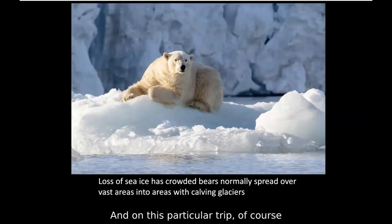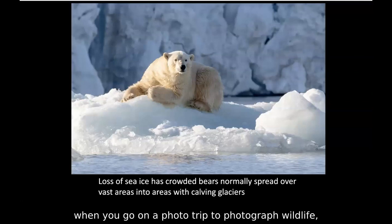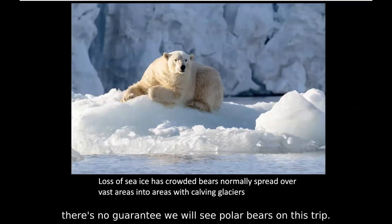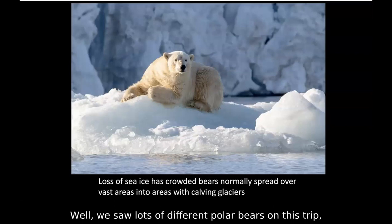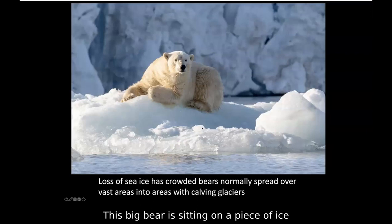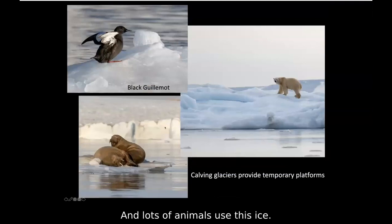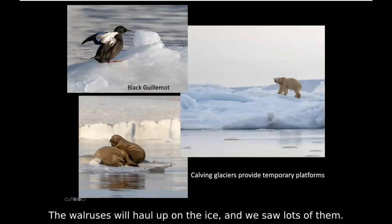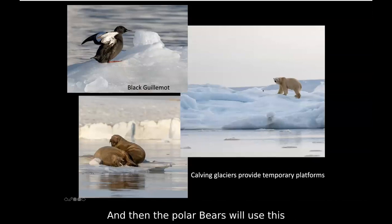Loss of sea ice has crowded polar bears — which would normally be spread over vast areas — into areas with calving glaciers. There was no guarantee we'd see polar bears on this trip, but we saw lots of them, probably because they were crowded into those areas. This big bear is sitting on a piece of ice that came off a glacier. Lots of animals use this ice: pelagic birds, walruses hauling out, and polar bears using it as a platform to find seals.